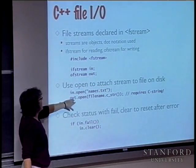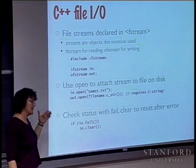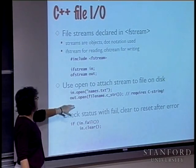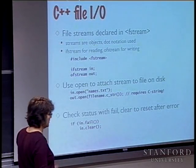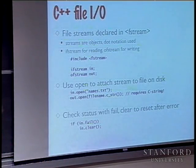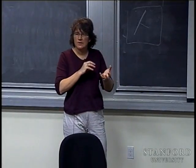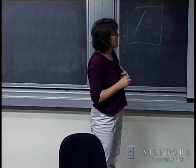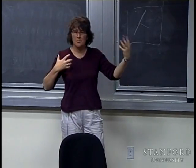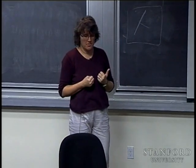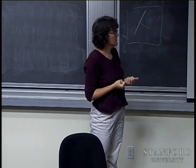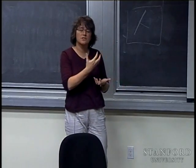Similarly, doing an out.open opens a file and positions the writing cursor at the very beginning. This is where C strings versus C++ strings becomes relevant. I talked a little bit last time about how they differ in one case of concatenation and how you can force a conversion from the old to the new.